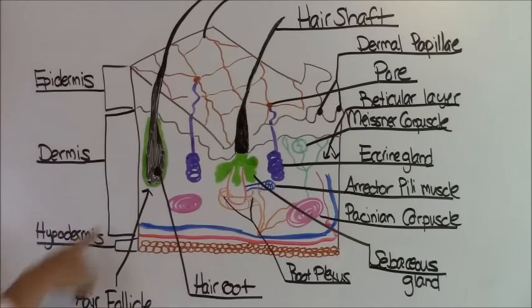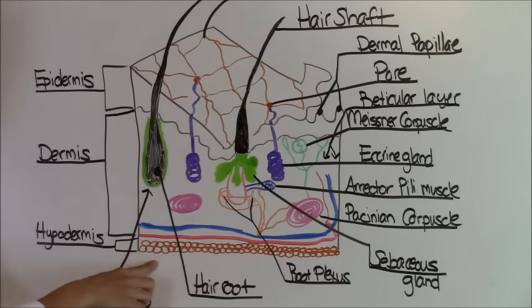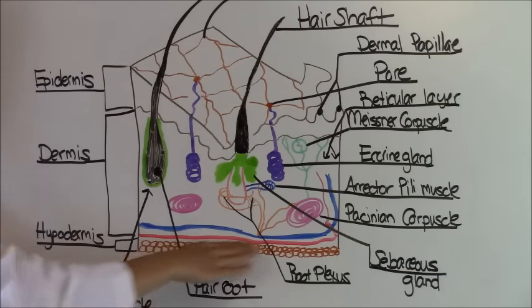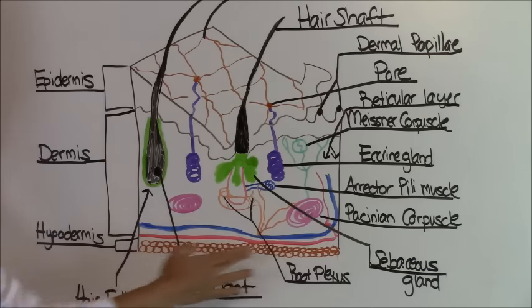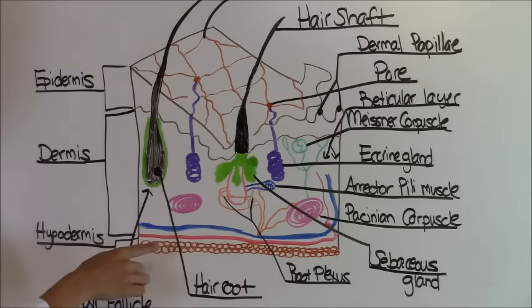Next we have the hypodermis. And like I said, it's not technically part of the integumentary system, but it is listed whenever you're studying it. And it's just the fat layer. What it does is it acts as an insulator for our body to keep us warm.